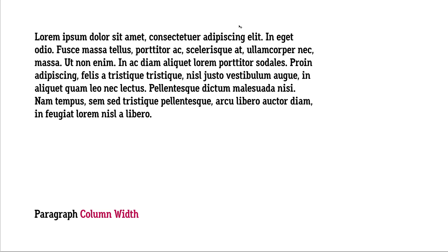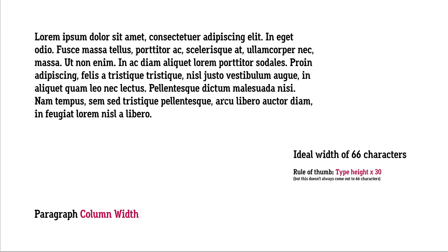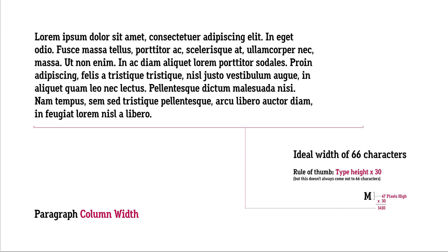Here we've got another paragraph, and this one is using a little rule of thumb that I like to use that kind of gets me close to that ideal 66 character width. So basically, what we're trying to shoot for here is a 66 character width. A rule of thumb is you take the height of the type and you times it by 30. But it doesn't always come out to 66 characters. We've got a font here that's 47 pixels high — times it by 30, and that gives us 1410 in pixel width. So that actually is demonstrated by this line here, and it shows us that 66 characters, which is this paragraph, kind of comes a little bit short.